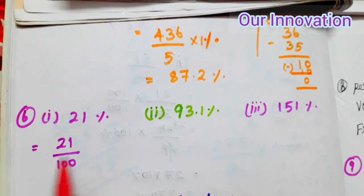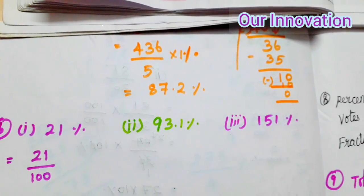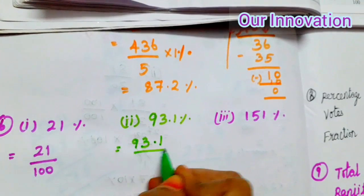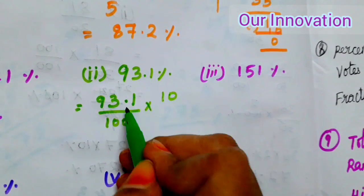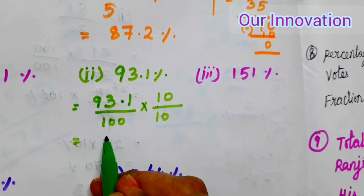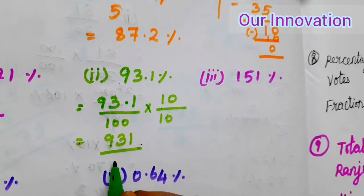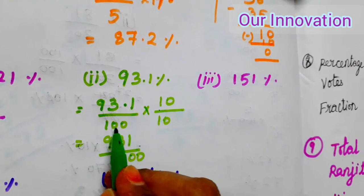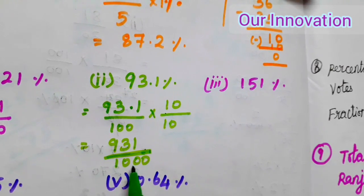93.1 percentage is equal to 93.1 by 100. Since the decimal has 1 place, multiply by 10 over 10: 93.1 by 100 × 10 by 10 equals 931 by 1000. So the fraction is 931 by 1000.